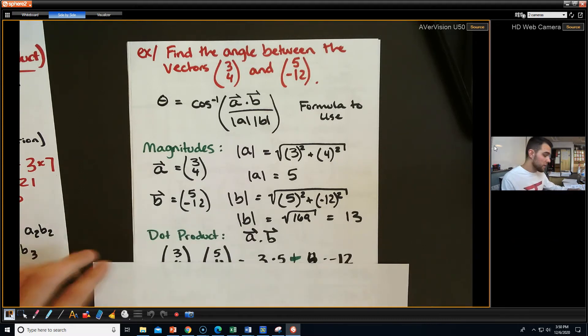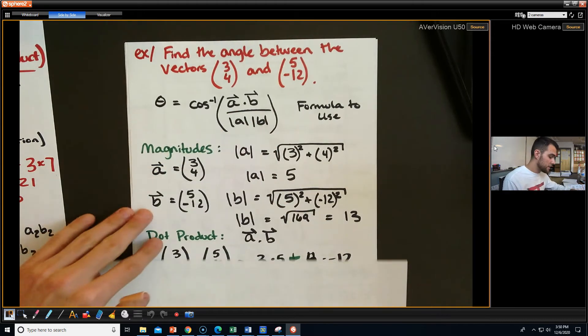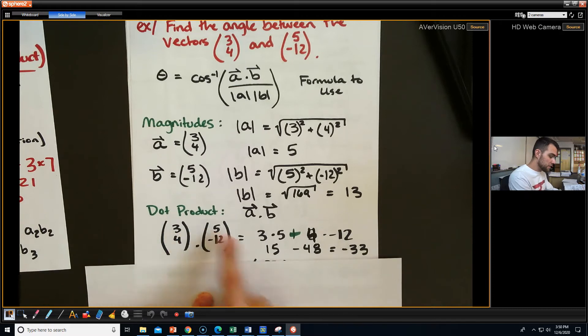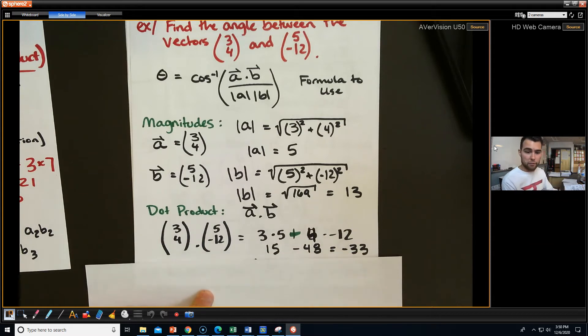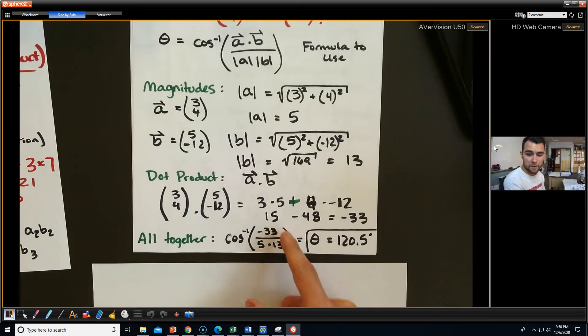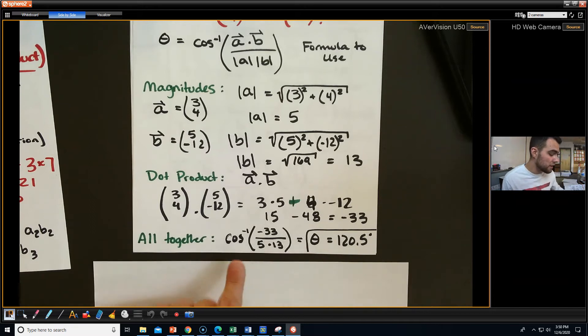Now, I've got to do the dot product. The dot product can be found by multiplying the components and then adding those components together. It should be 3 times 5 plus 4 times negative 12, and you end up getting negative 33 for your dot product. When you put this all together, you're going to put your arc cosine of negative 33 up top because that's your dot product, and then you're going to multiply the magnitudes down low. Make sure your calculator is in degrees. You get 120.5 degrees as the angle between those two vectors. That's really all there is to it, and that's kind of our main thing that we're going to be doing today.